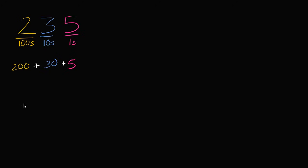Now what I want to do in this video is think about place values to the right of the ones place. You might say, wait — I always thought that the ones place was the place furthest to the right. And everything that we've done so far, it has been. But to show that you can go even further to the right, I'm going to put a little dot right over here, and we call that a decimal point. That dot means that anything to the right of this is going to be place values that are smaller than the ones place.